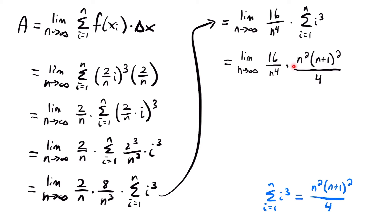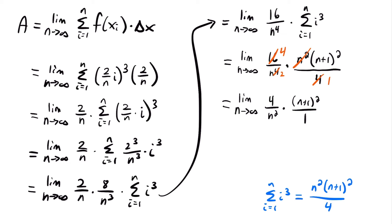We have n² in the numerator and n⁴ in the denominator, so n² cancels out, leaving n² in the denominator. Also, 16 divided by 4 equals 4. Simplifying gives us the limit as n approaches infinity of 4/n² times (n+1)². We can further simplify to 4 times (n+1)² divided by n². Pulling the constant 4 outside the limit, we get 4 times the limit as n approaches infinity of (n+1)²/n².